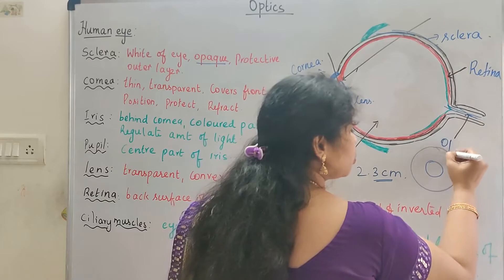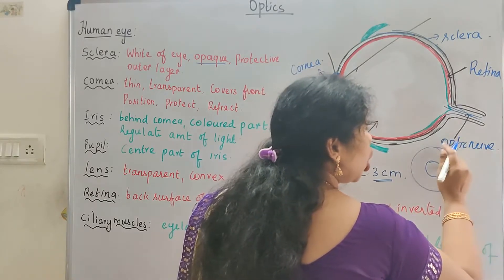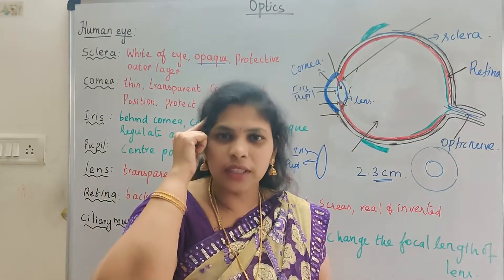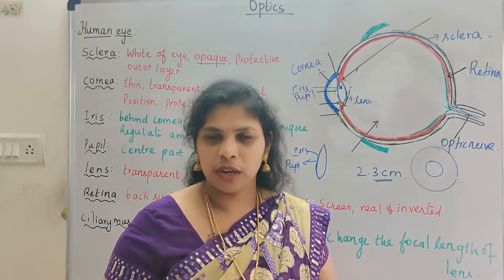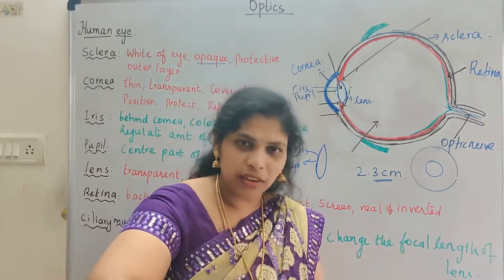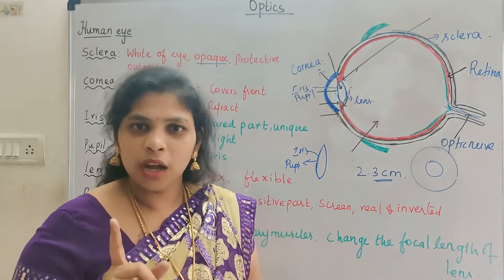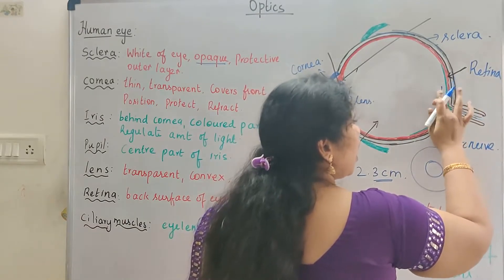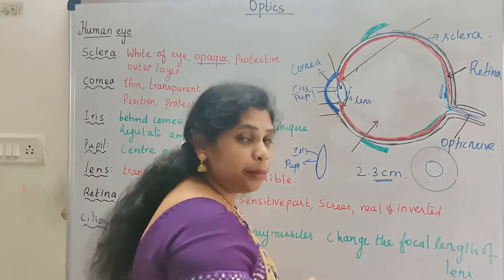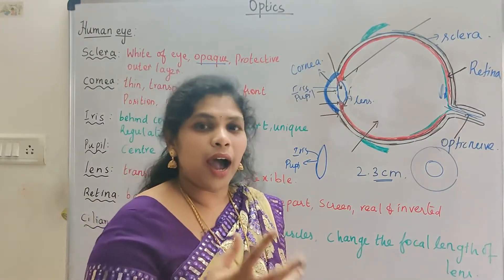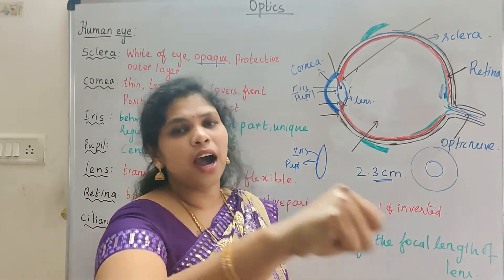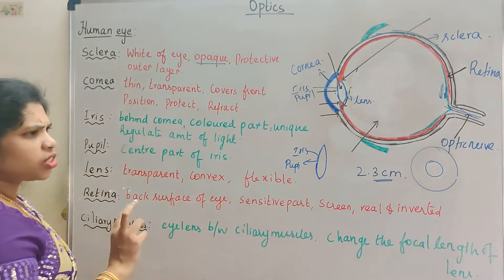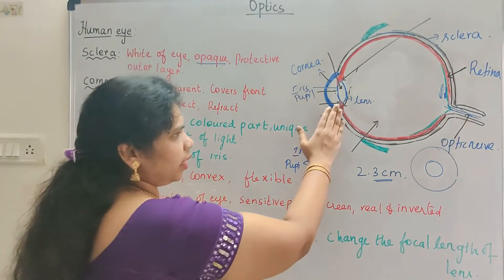This image is then transmitted via the optic nerves. The retina stores the inverted image, and this inverted image is sent to the brain through the optic nerves. The brain processes the signal and we perceive the image correctly.